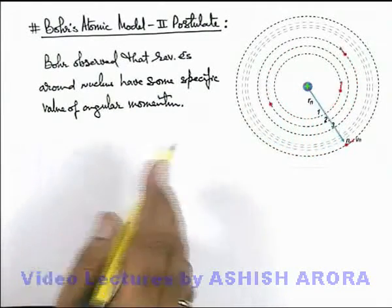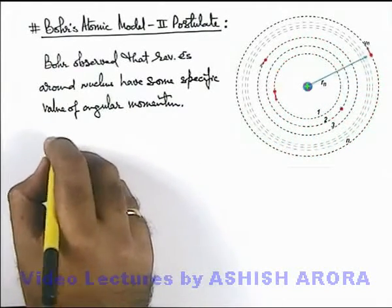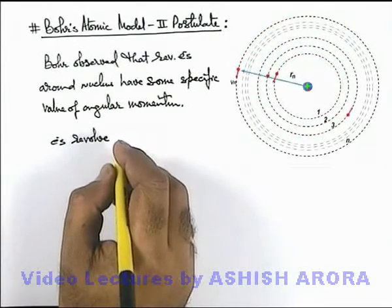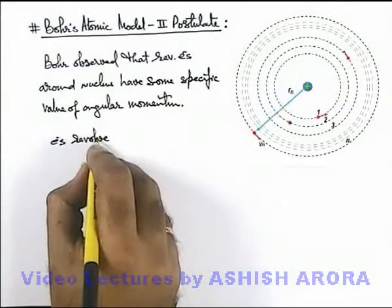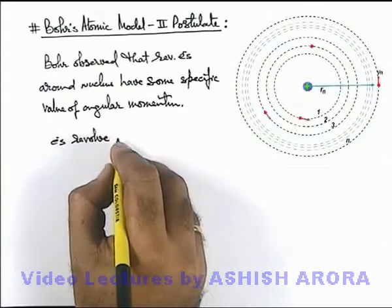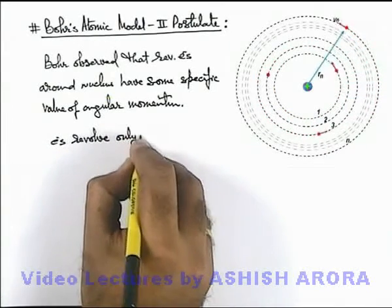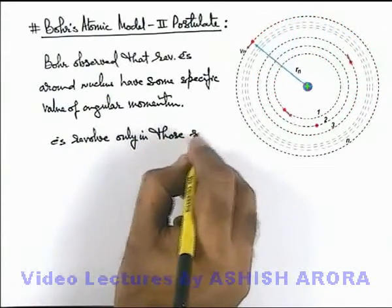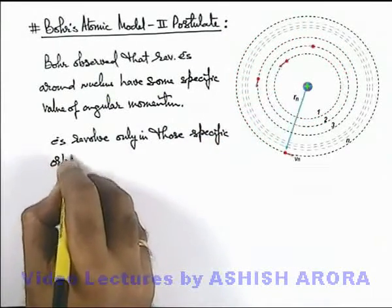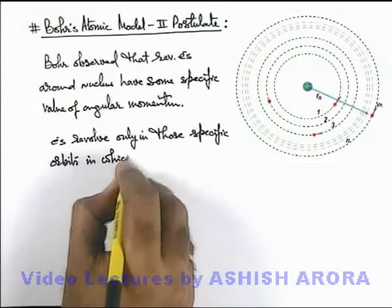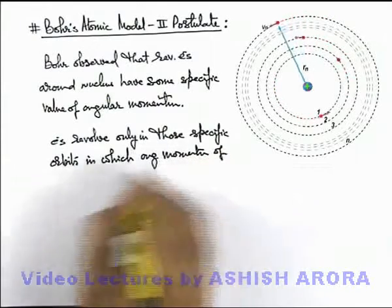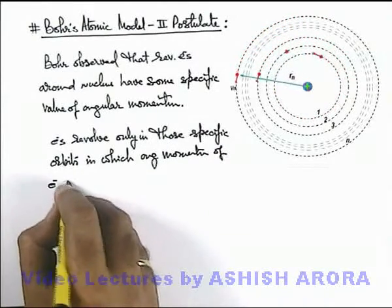It was not calculated but rather given as an analysis, based on which it was obtained that electrons revolve only in those specific orbits in which the angular momentum of the electron is quantized.